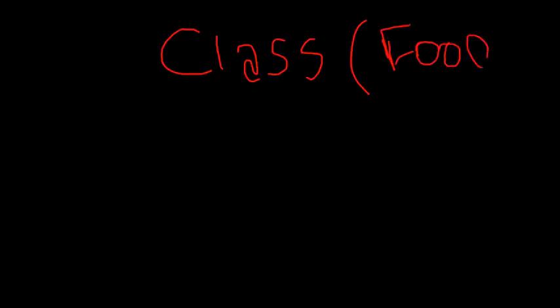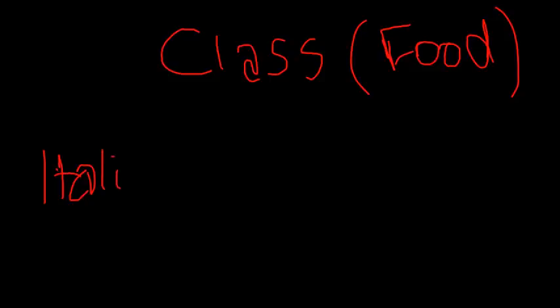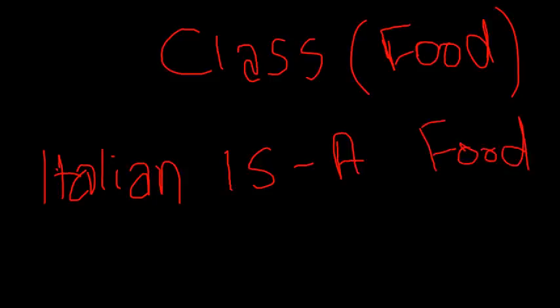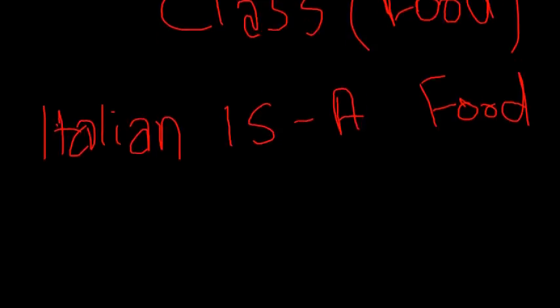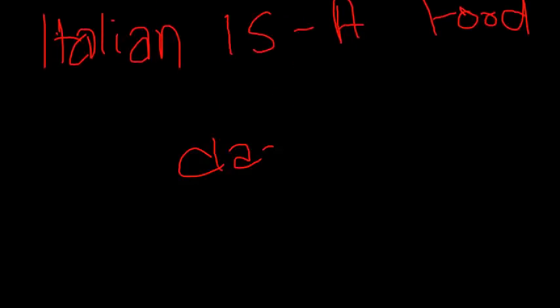Now let me bring this example into Java. What I just told you, you can think of as a class. Let's say food is your class. Now let's say Italian is a food. I know the English is not correct but I'm stressing on this IS-A right here. So Italian is a kind of food. So what if I had a class called Italian?